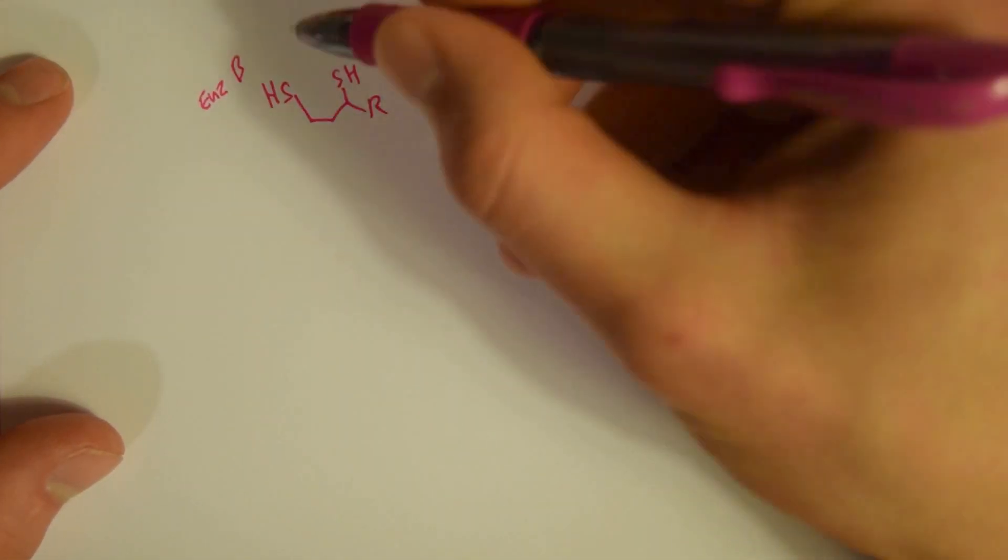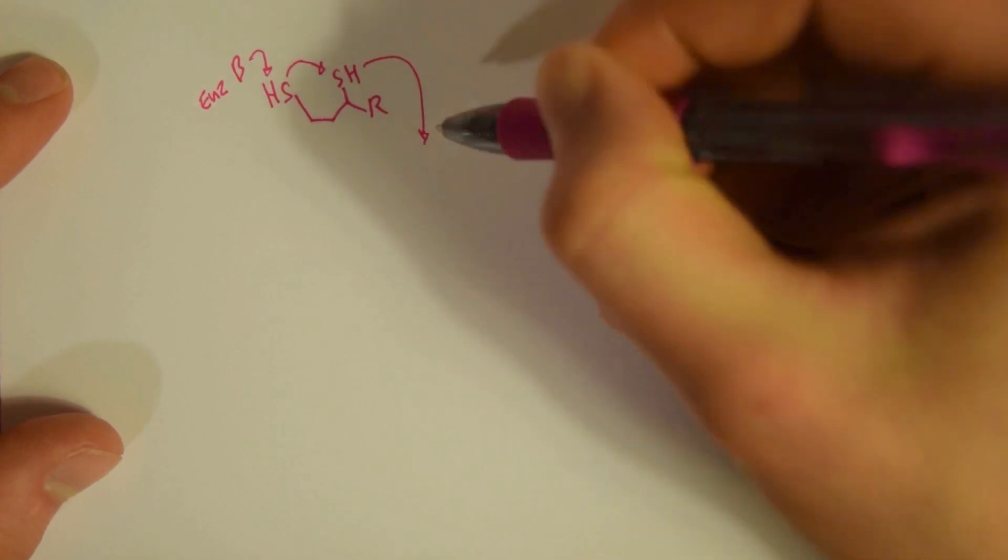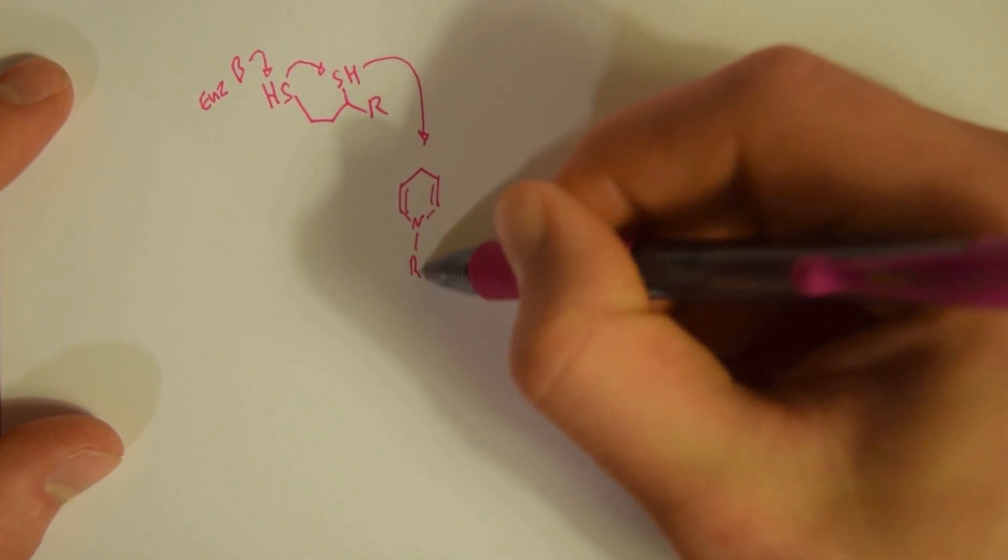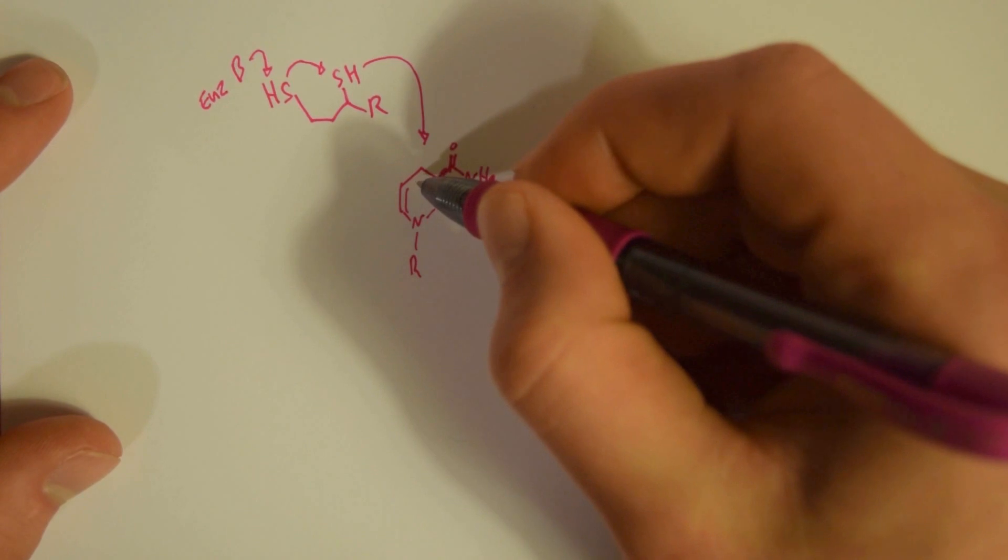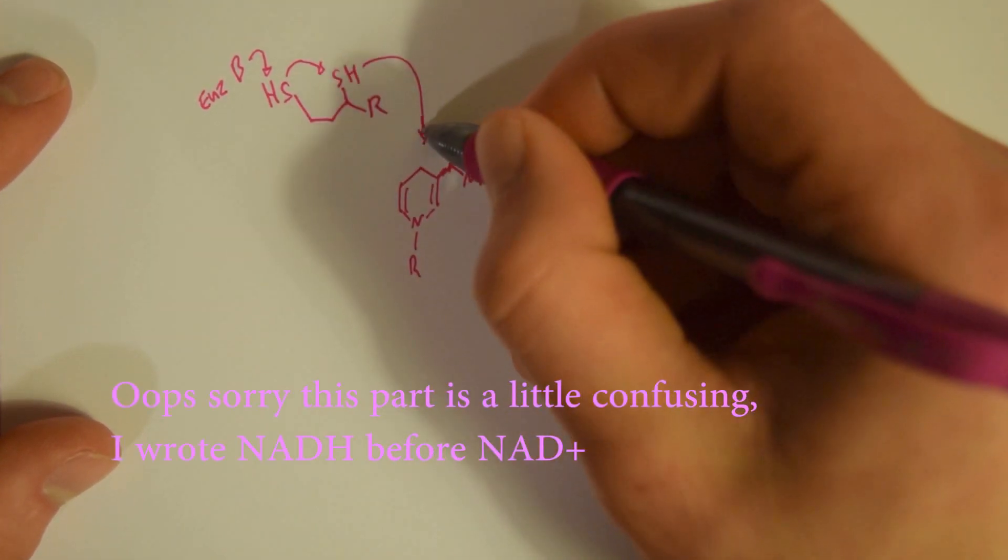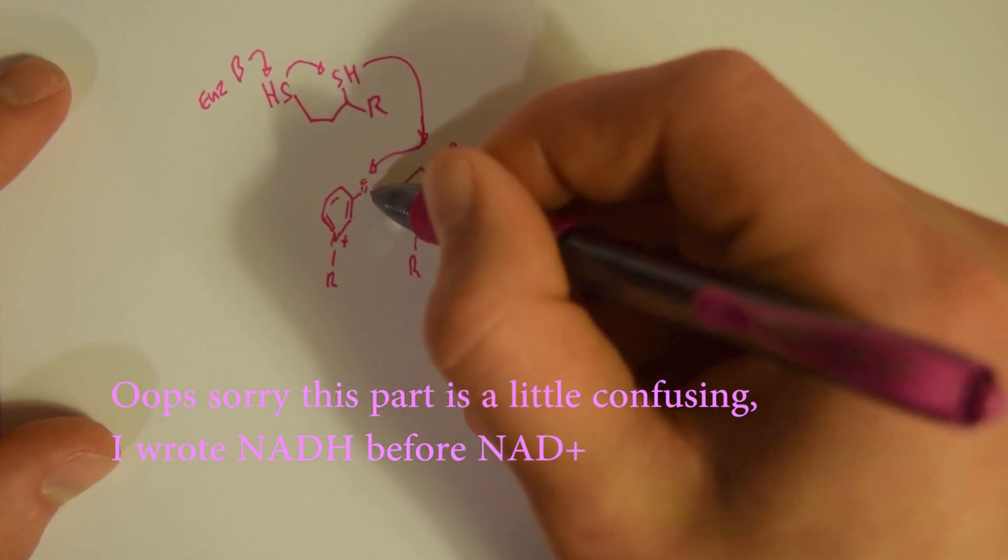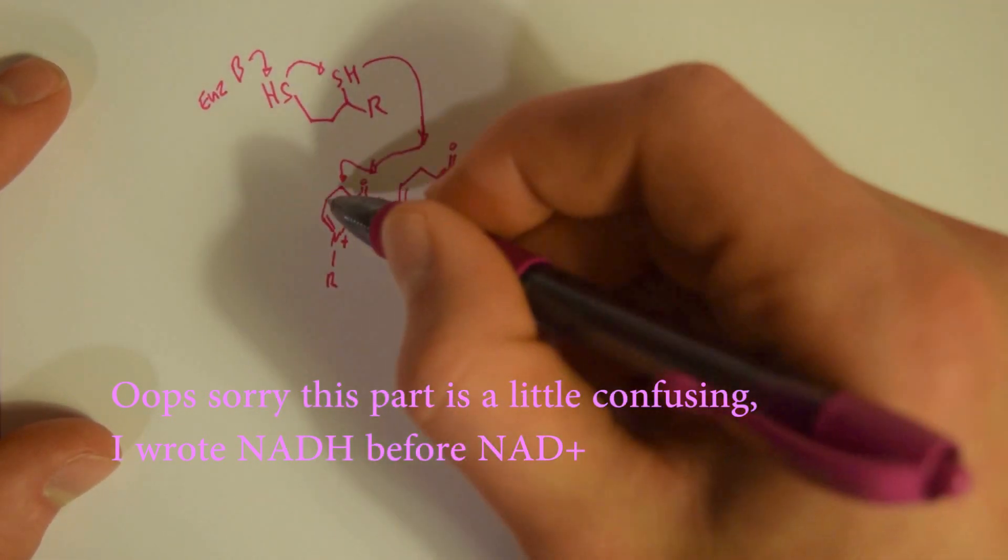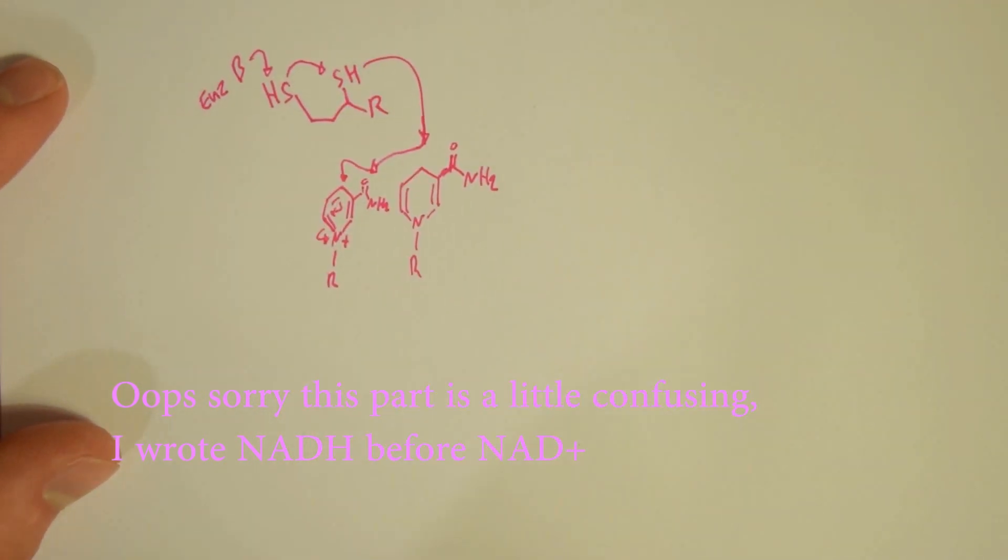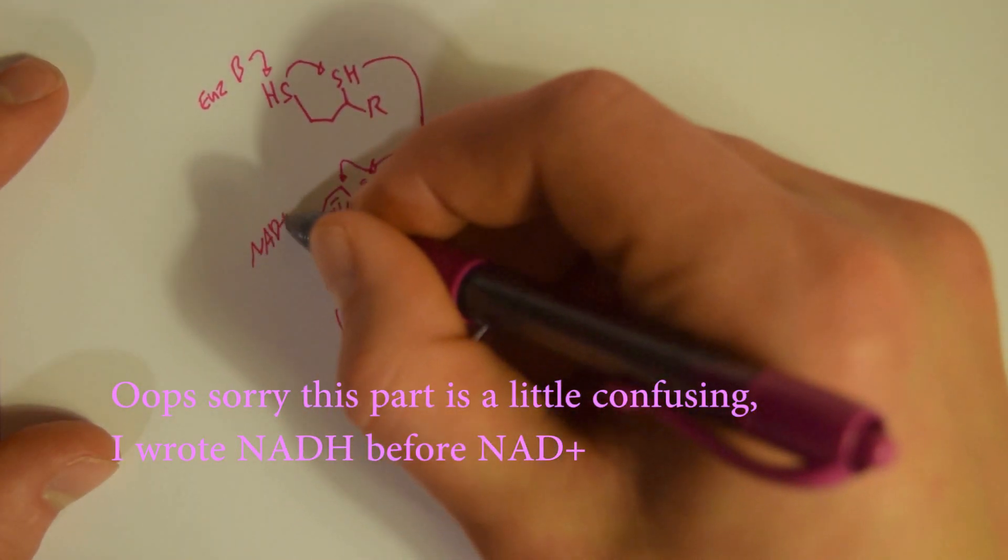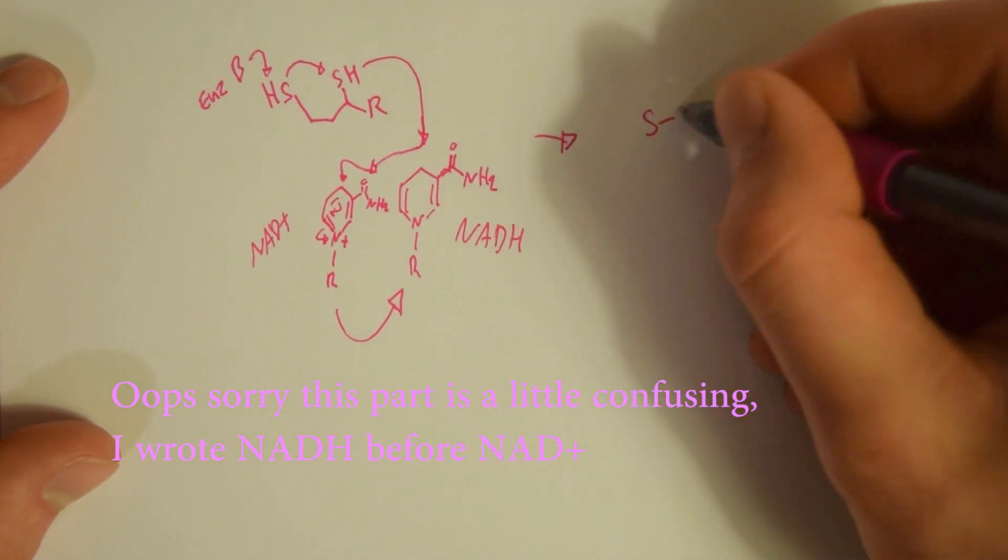But we can't leave that lipoamide in its current state. We need to take it back to its former state so that can be used again. And this involves NAD+. So a base takes off one of the protons on the lipoamide, then the sulfur attacks the other sulfur, and that proton goes down and attacks the NAD+, and we form NADH and also the lipoamide again.